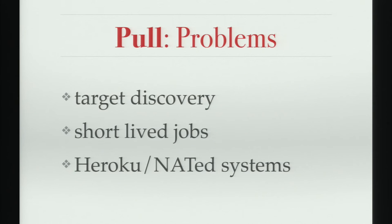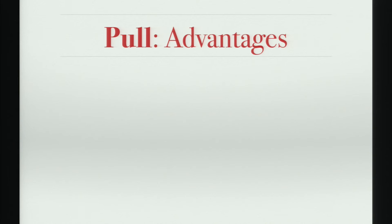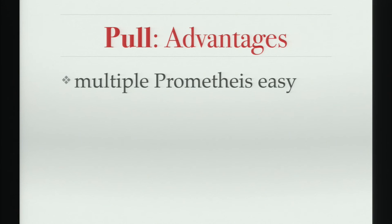There is one final problem, and this is actually a problem: closed, NATted, or load-balanced systems like Heroku or end-user appliances that run in a customer's local network. You cannot easily expose things, and if you do, people may get really mad at you. As far as I know, there's nothing concrete yet for Heroku. Generally speaking, Prometheus is intended to run in the same network as its targets — if you cannot do that, you probably have to look elsewhere. But there are a lot of advantages too. High availability is super easy: you just run multiple Prometheus servers and point them at the same exporters. Done.